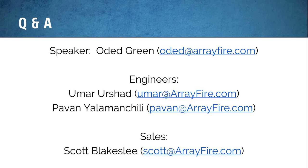This is Umar from ArrayFire. Depending on the algorithm, we do use local memory. For example, convolution brings in a local window as well as the kernel into local memory and then works on that. It really depends on the algorithm — sometimes it doesn't make sense. For JIT-type calculations you don't really need that optimization since you're only going to use the data once. But we use it wherever we can.